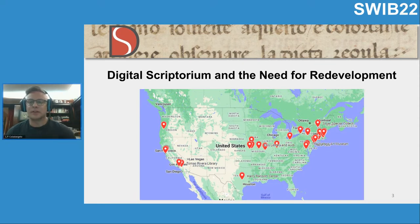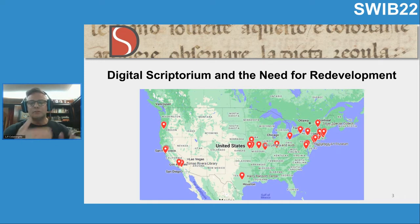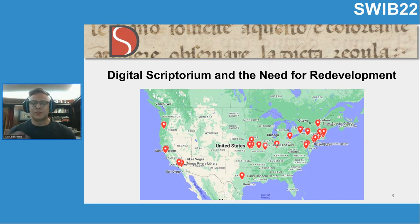Digital Scriptorium is a consortium of individual libraries, museums, and other cultural heritage institutions — approximately over 40 of them — that have all come together in order to aggregate their metadata about their pre-modern manuscripts in one single user interface. The Digital Scriptorium consortium was founded on this notion of developing a national union catalog, so the goal was to aggregate metadata about manuscripts in US collections and to be able to search across all of that metadata. And over time, as I'll discuss, there were some limitations to how that worked.